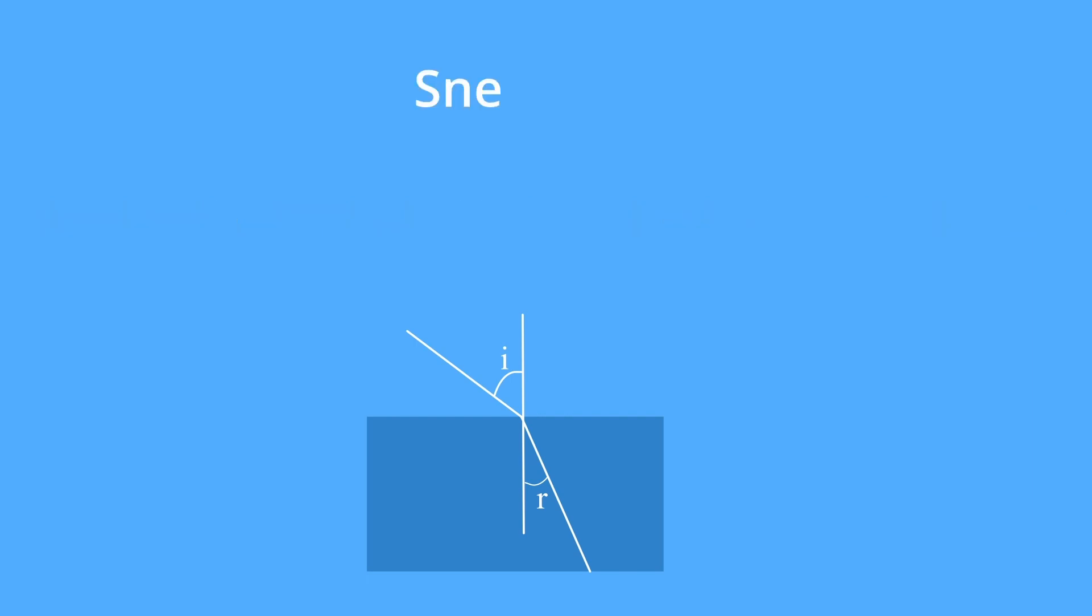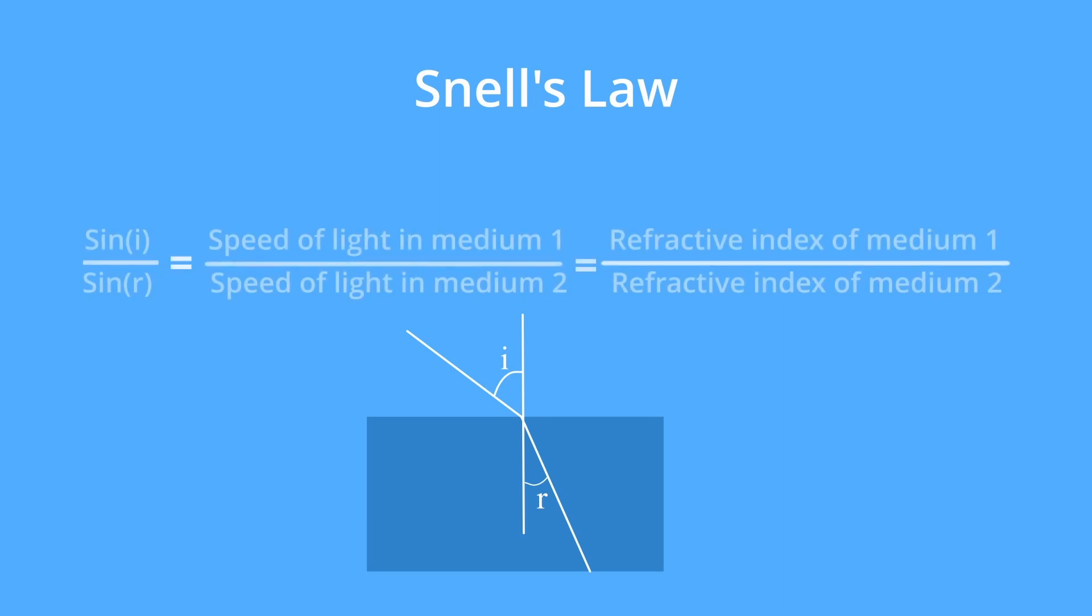The second law is called Snell's law. It states that the ratio of sine of angle of incidence to sine of angle of refraction equals the ratio of speed of light in medium 1 to medium 2, or the ratio of refractive index of medium 1 to medium 2.